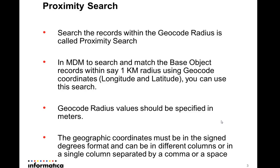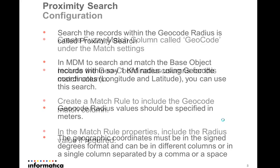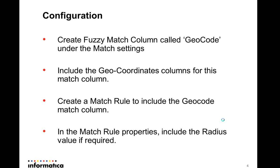Remember that the geocode radius value should be specified in meters in MDM. Even if you have a value in miles or kilometers, convert it to meters before specifying it. The geographic coordinates must be in signed degrees format, like +75.34 or -73.something. The latitude and longitude can be in different columns in the base object, or in a single column separated by a comma, space, or other separator. Refer to the MDM configuration guide for more details.